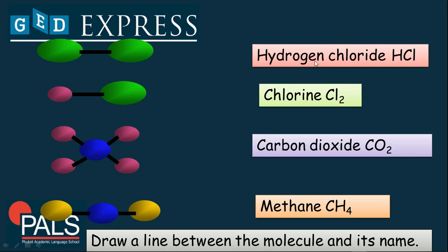If your answer for hydrogen chloride, HCl, is this, then you're right. For CH4, that means there are four hydrogen and one carbon. This molecule suited that chemical formula. And carbon dioxide is this one. There are two molecules of oxygen and one atom of carbon. Great.